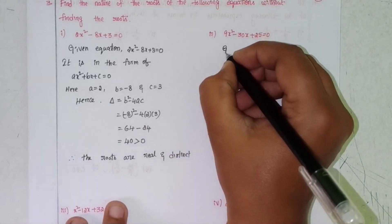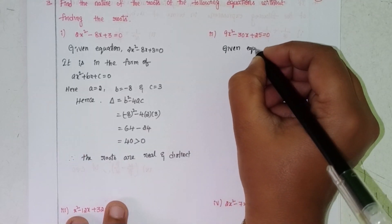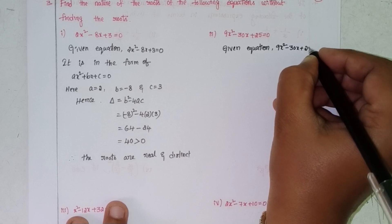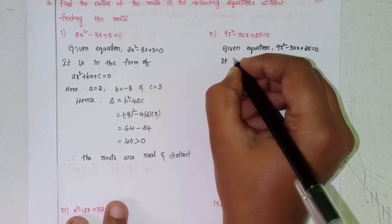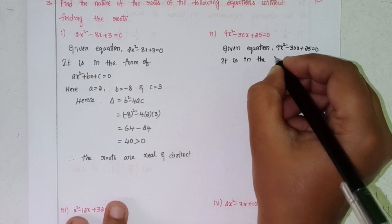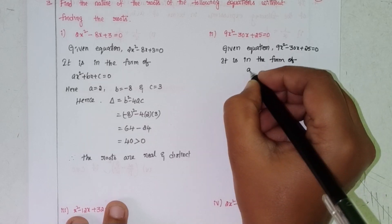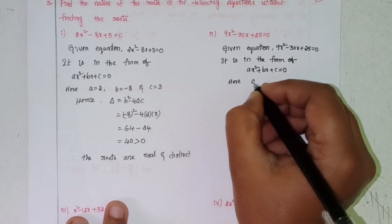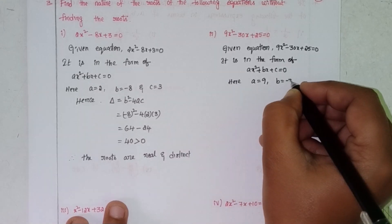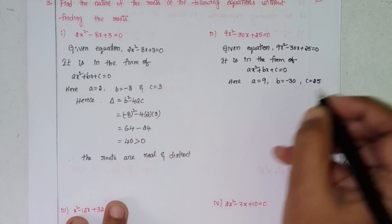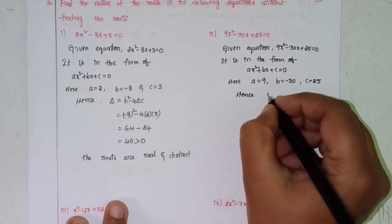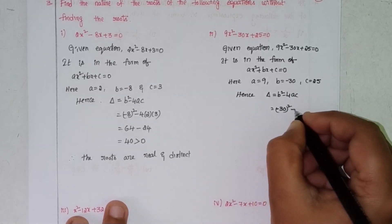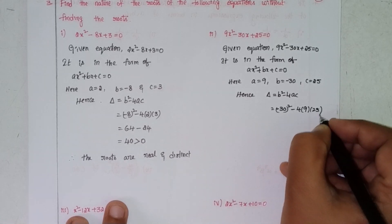Next, given equation: 9x² - 30x + 25 = 0. It is in the form of ax² + bx + c = 0, where a = 9, b = -30, and c = 25. Hence, delta equals b² - 4ac, where b means -30 whole square minus 4ac.